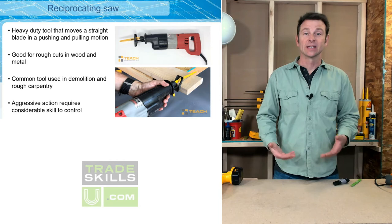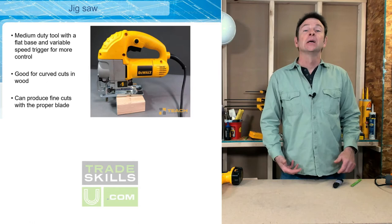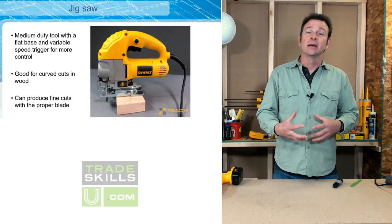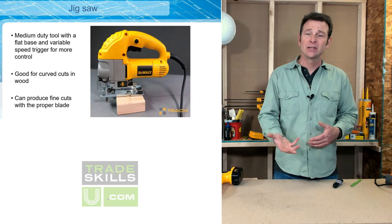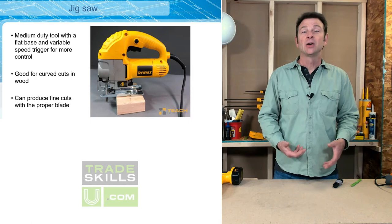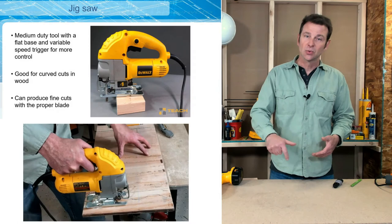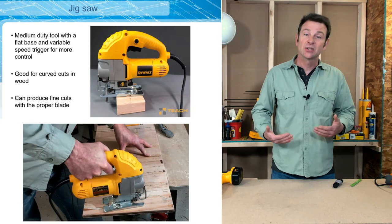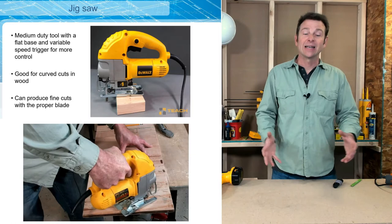Another type of reciprocating saw is the jigsaw. While a Sawzall is a rough-cut saw, a jigsaw produces a much more finished cut. It won't handle the depth and thickness of materials a reciprocating saw would — it's typically for sheet goods. A jigsaw is much more precise and easily controlled. It's more of a one-handed tool, and the blades can make very fine cuts. The other thing a jigsaw is really good for is cutting curves — it can cut curves, circles, and within the center of panels.